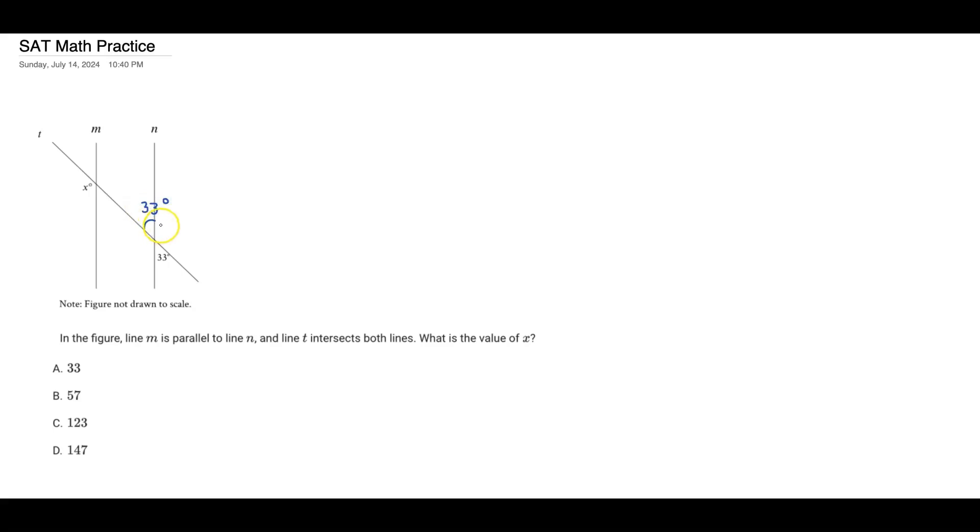So if we call this angle right here that we just labeled angle one, what we can see is that angle one, and let's call this one angle two, angle one and two are supplementary angles. Because two angles that make up a straight line will be equivalent to 180 degrees.